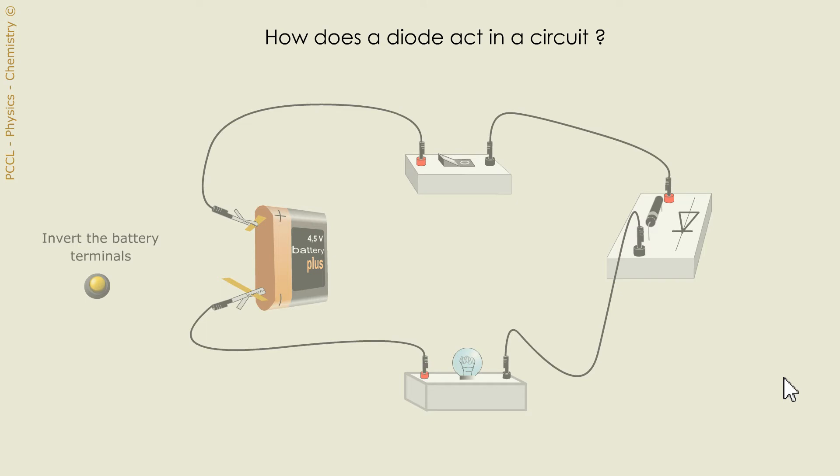The diode. We will talk about the diode whose symbol is here. It's an arrow. Besides, this is no accident. We see here that this arrow is in the same direction as the current.